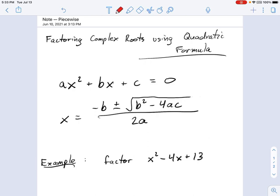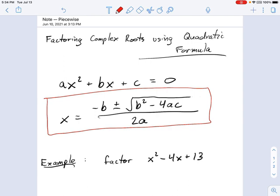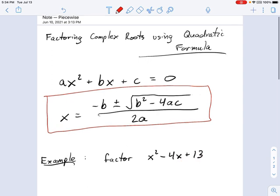Well, if you can write it in this form, then you know the solutions to it are going to be this. This is what the quadratic formula is all about. It says x is going to be equal to negative b plus or minus the square root of b squared minus 4ac, all divided by 2a. Hopefully you have that drilled into you from previous years. Let's go ahead and use this to figure out how to factor this example right here, x squared minus 4x plus 13. We're going to use the quadratic formula to help us out with that.